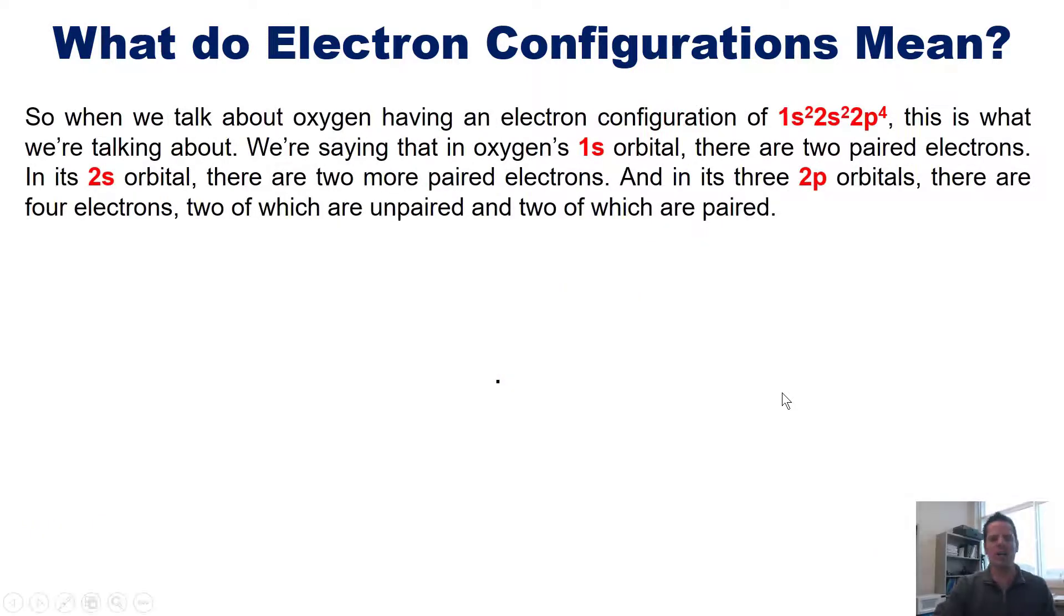I should point out that the two paired electrons in the 2p orbital along the x-axis right here are actually different from each other because one of them has a plus 1 half spin and the other has a minus 1 half spin. So when we talk about oxygen having an electron configuration of 1s2, 2s2, 2p4, this is what we're talking about. We're saying that in oxygen's 1s orbital, there are two paired electrons. In its 2s orbital, which is a little bit further out, there are two more paired electrons. And in its three 2p orbitals, there are four total electrons, two of which are unpaired and two of which are paired.